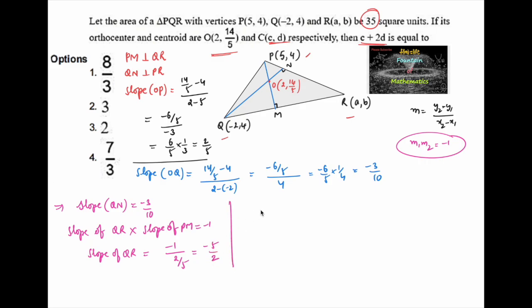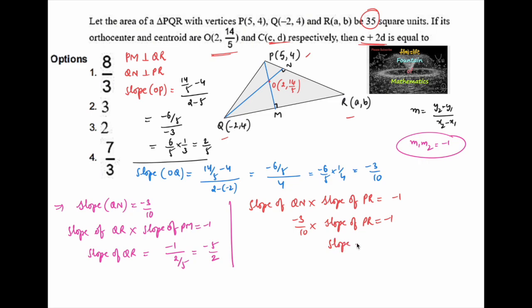Similarly, slope of QN times slope of PR equals -1. Slope of QN is -3/10, so slope of PR equals -1 divided by (-3/10), which is 10/3. Since we now know the slopes of QR and PR, we can find their equations.